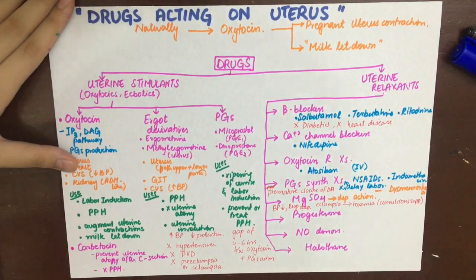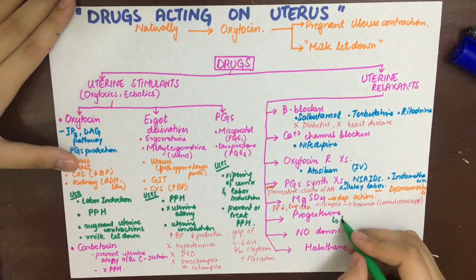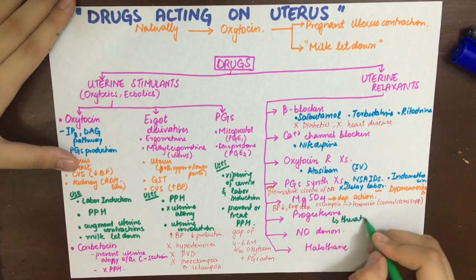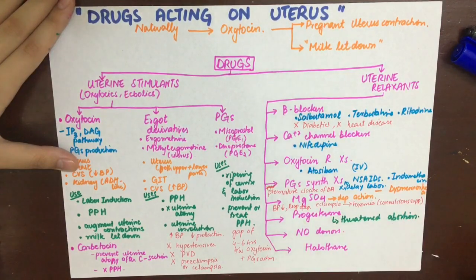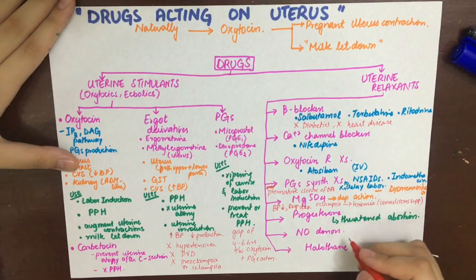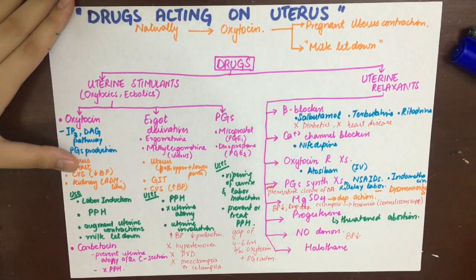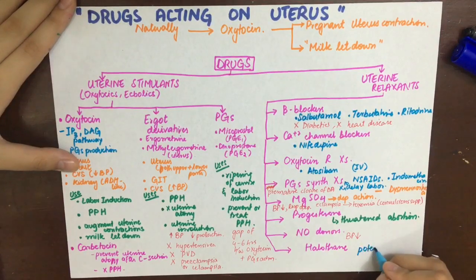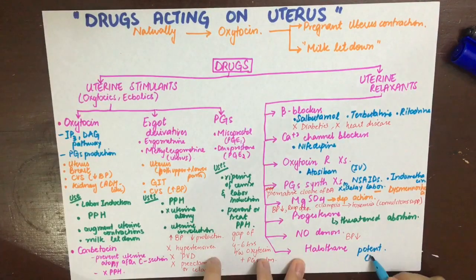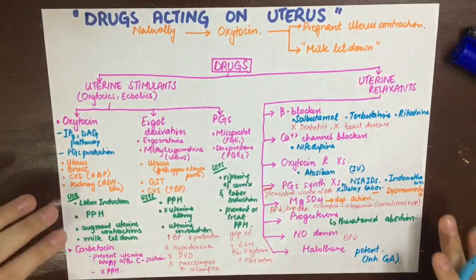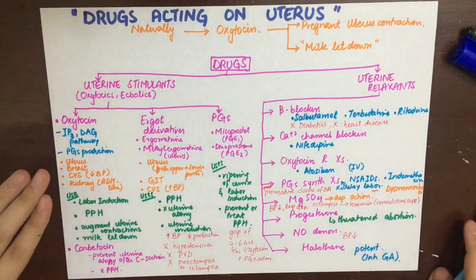Progesterone is used to treat threatened abortion. Nitric oxide can also be used as a uterine relaxant but will cause hypotension in the mother. Lastly, halothane, which is an inhalational general anesthetic, has a potent uterine relaxation action.